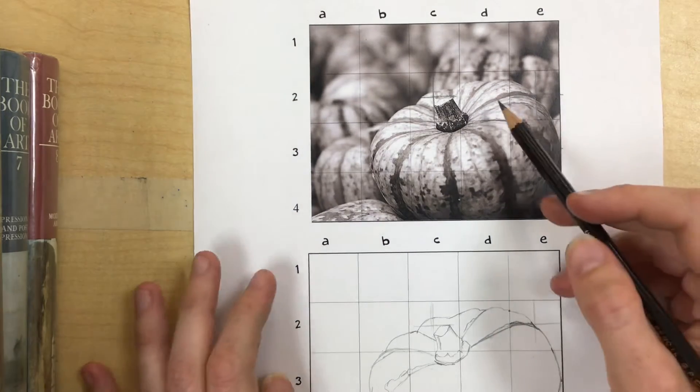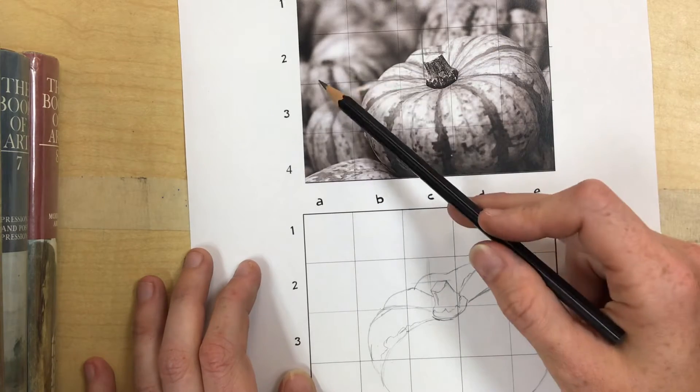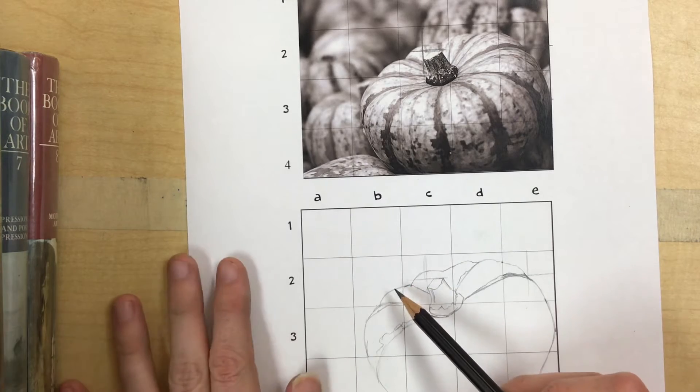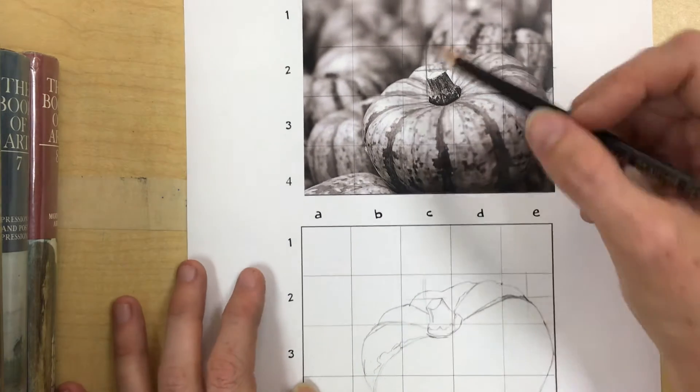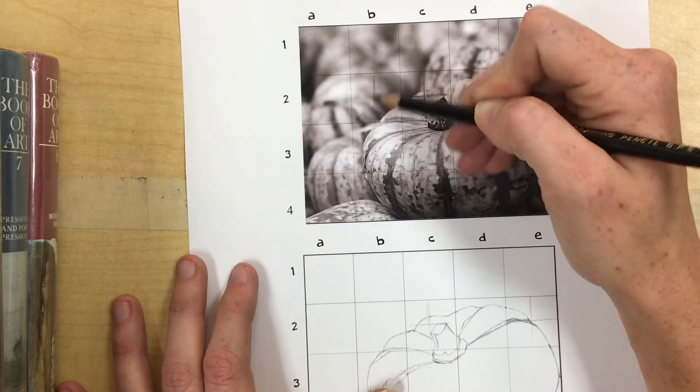So you're going to try to draw what you see in, you know, 2B and the same 2B down here. If you need to, you can break it down even more. It doesn't have to be perfect.